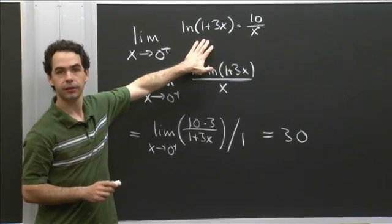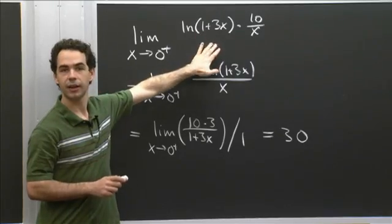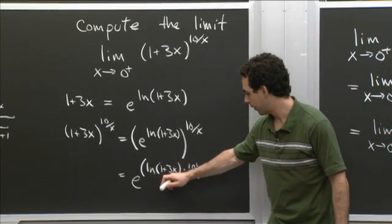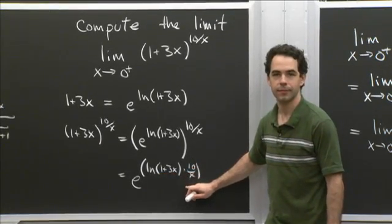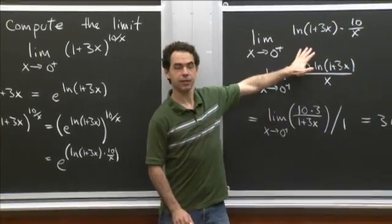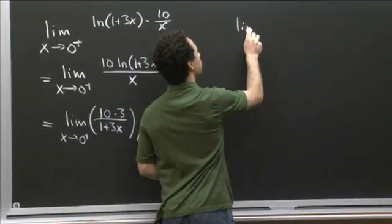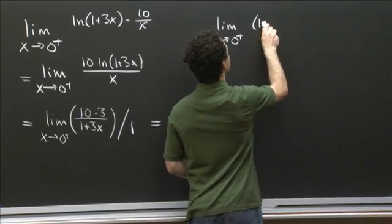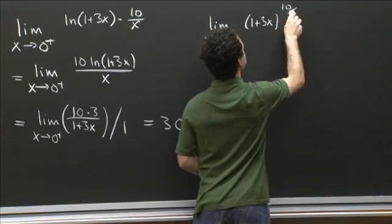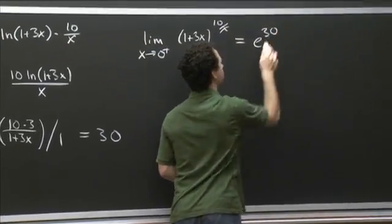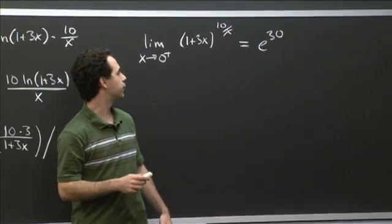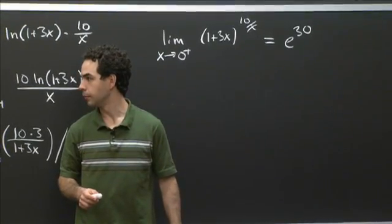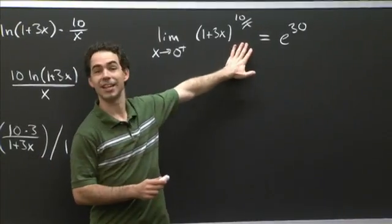So this limit of the exponent equals 30, but this isn't the limit we started out wanting to compute. The limit we started out wanting to compute is e to the ln(1 plus 3x) times 10 over x — it's e to the this. So our original limit, the limit as x goes to 0 from the right of (1 plus 3x) to the 10 over x, is equal to e to the 30th power, which is pretty huge.